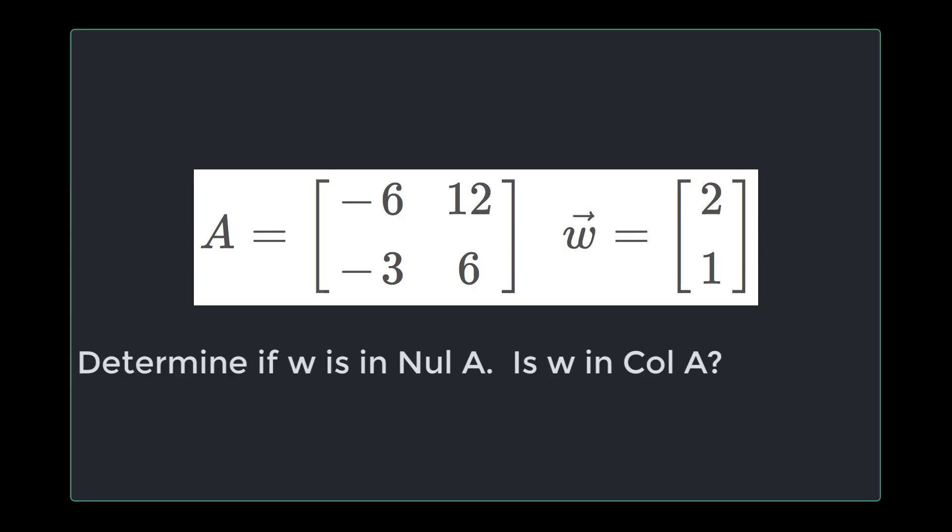The question we're working on today is, let A be the matrix [-6, 12; -3, 6] and w be the vector [2, 1]. Determine if w is in the null space of A, and then determine if w is in the column space of A.